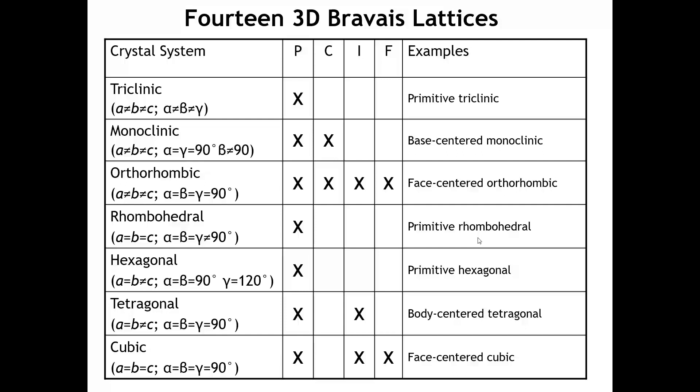Just as in two dimensions not every primitive lattice has a centered lattice, the same thing happens in three dimensions. This table shows the different shapes of the Bravais lattices and indicates where centering is possible. Only in an orthorhombic lattice can we have all three types of centering; in other primitive lattice types only certain centerings apply. When you add it all up, we end up with 14 different Bravais lattices in three dimensions — the basis of the translational symmetry in three-dimensional crystals.